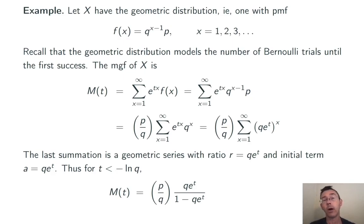Rewriting it using that fact I get p over q times the sum from x equals 1 to infinity (qe^t) to the x power. This is helpful because we now have a geometric series. The ratio is qe^t and the initial term when x equals 1 is also qe^t. So assuming that geometric series converges, which is the case when t is less than negative ln of q, we get the sum just of that geometric series to be qe^t over (1 minus qe^t). And of course we still have that factor of p over q out front.